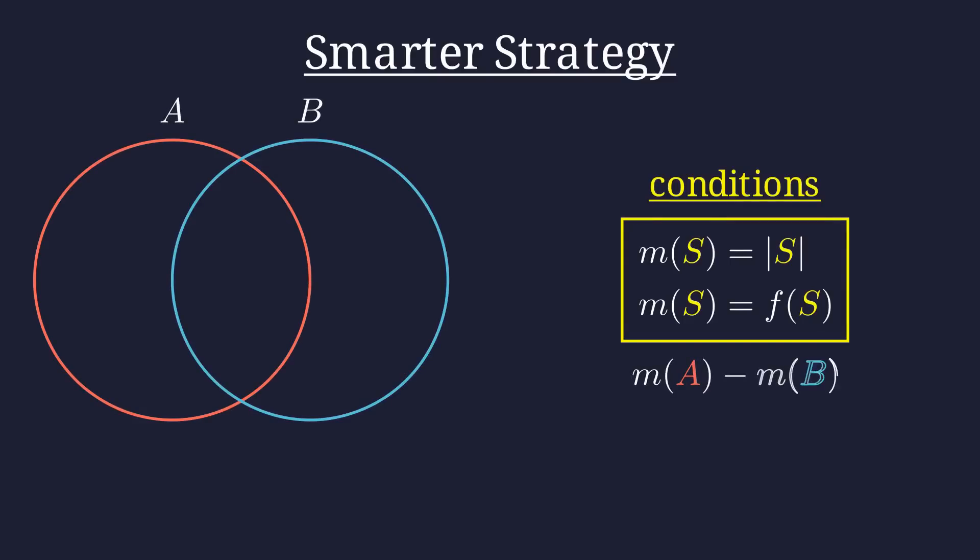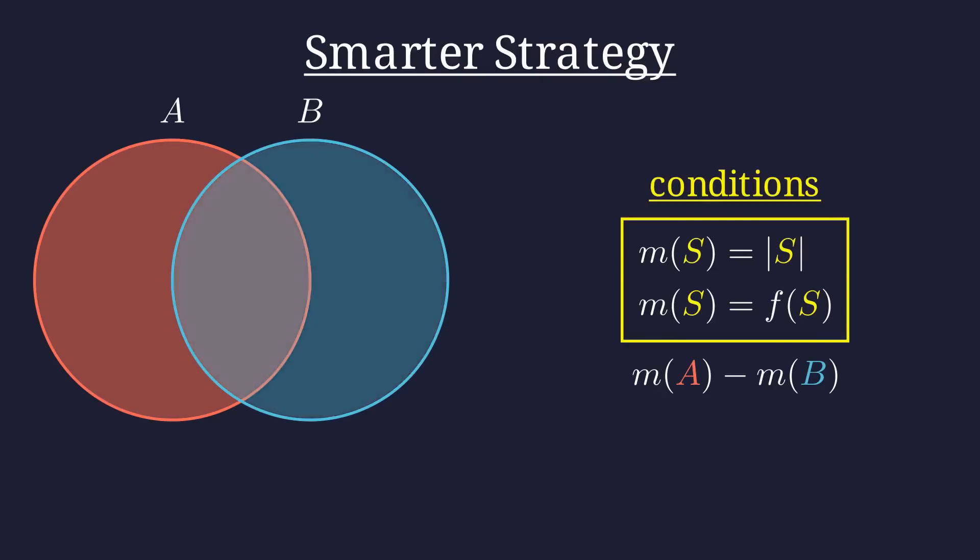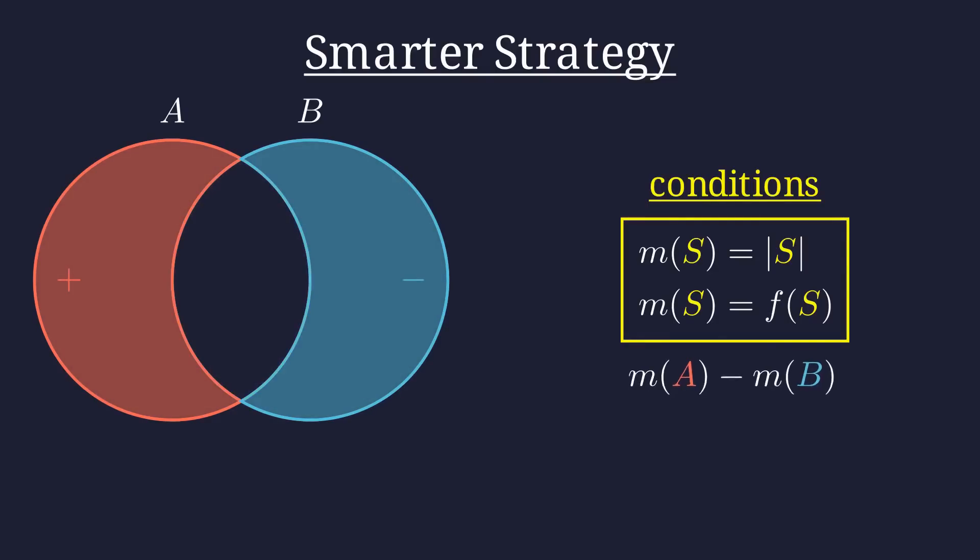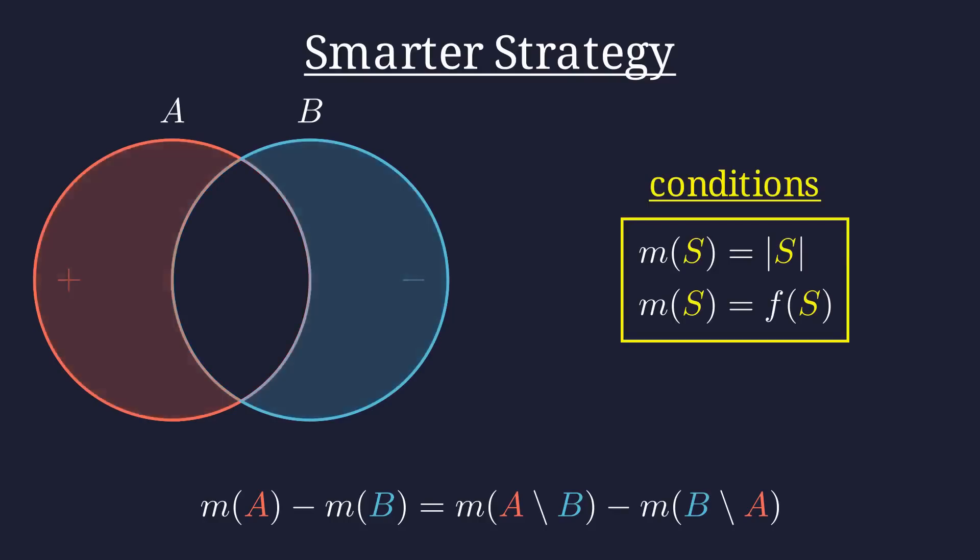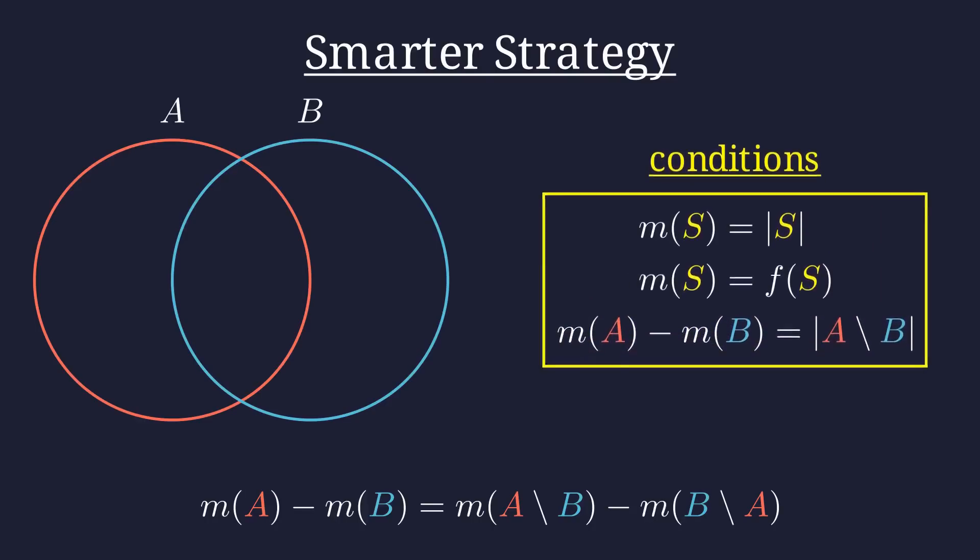Considering the mine counts of these two example sets A and B, we can subtract one from the other. As can be seen in our diagram, this is in fact only the difference between these two regions, A set minus B and B set minus A, as their intersection is included in both A and B and is therefore eliminated. This is important because, remembering back to what we noted in our example, the only valid configuration where we can use this strategy is when this difference equals the size of the equivalent set difference.